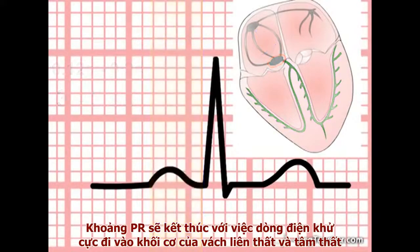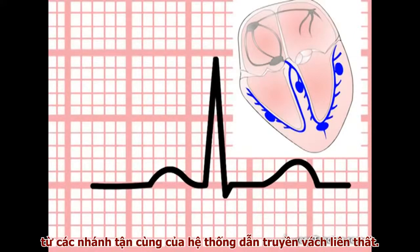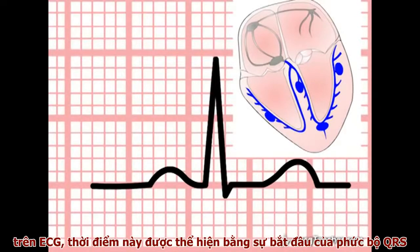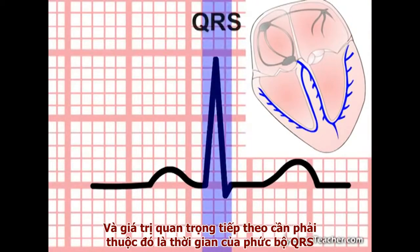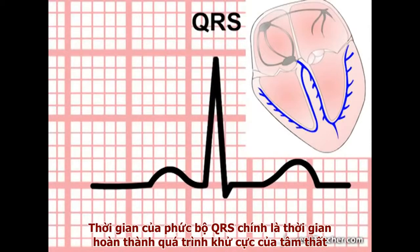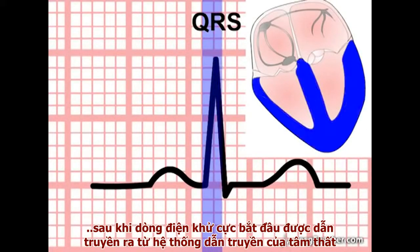The PR interval ends with the release of current into the main muscle mass of the septum and ventricles from the terminal branches of the intraventricular conducting system. On the ECG, this point is marked by the onset of the QRS complex, and the next key value we need to learn is the duration of the QRS complex. The duration of the QRS complex represents the time taken for ventricular depolarization to be completed following the release of depolarizing current from the conducting system.